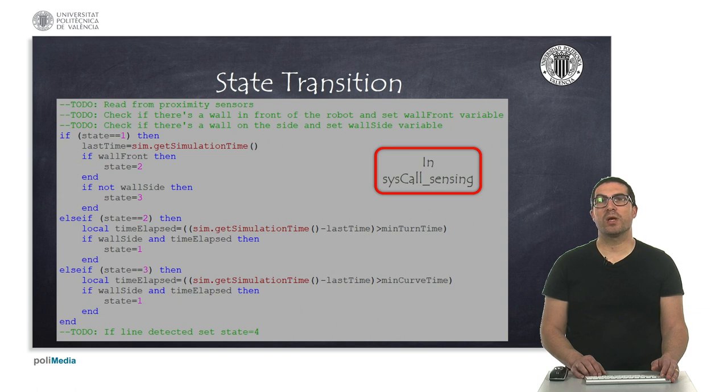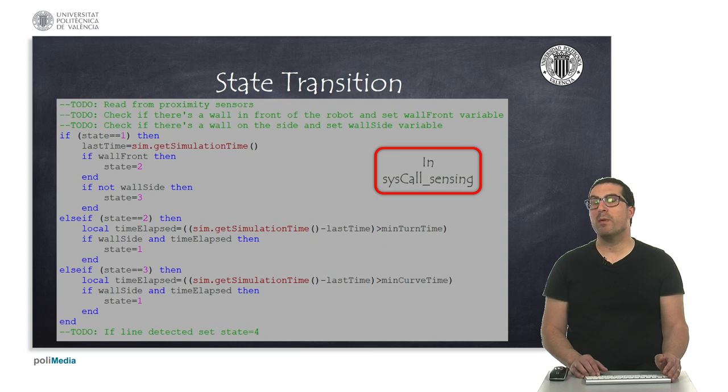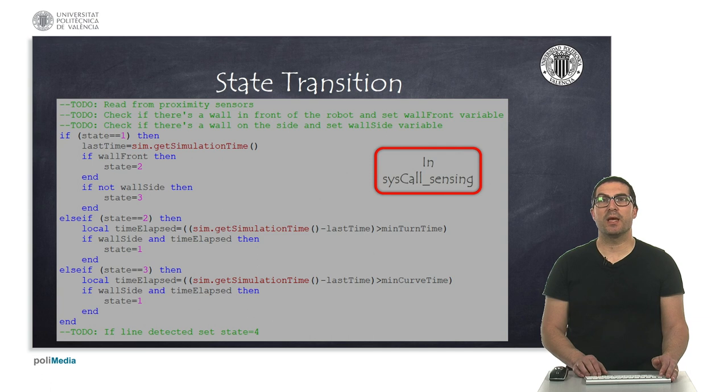In addition to this, here I also include the code that will ensure that when the robot is in states two and three, when it's doing the turn or the curve, the robot stays in these states at least for a minimum amount of time. This time will be pre-computed according to the speeds, you can compute them in the syscall init function. These times are indicated here with the variables min turn time and min curve time.